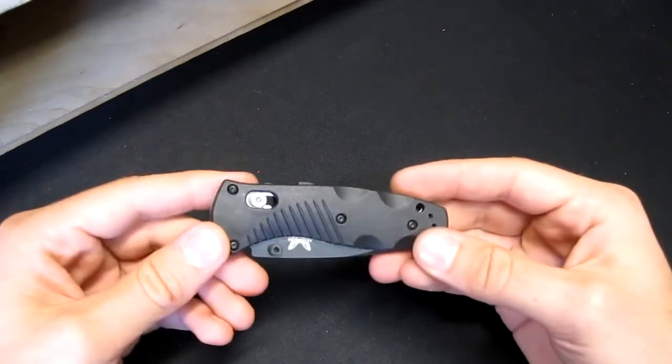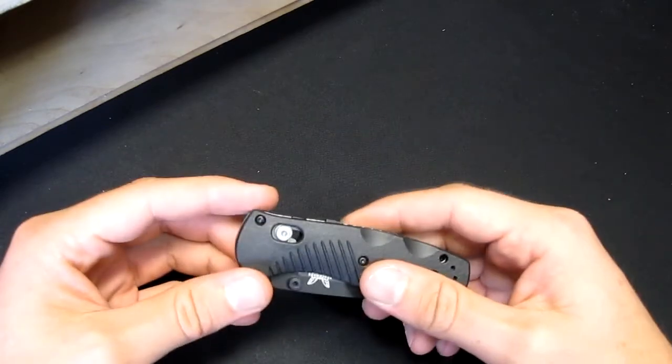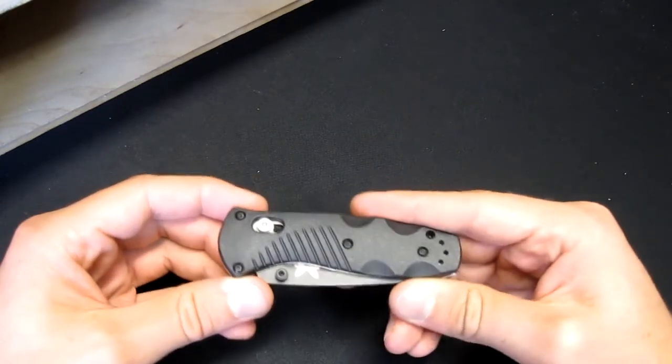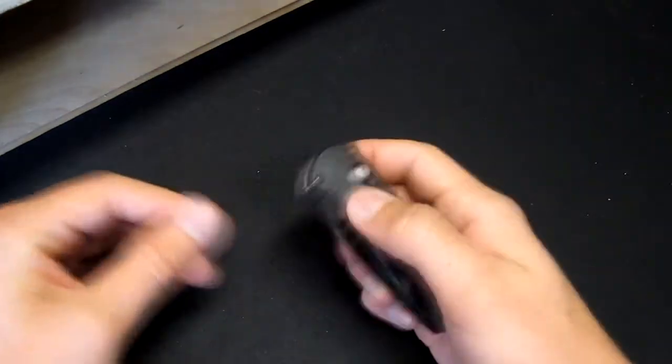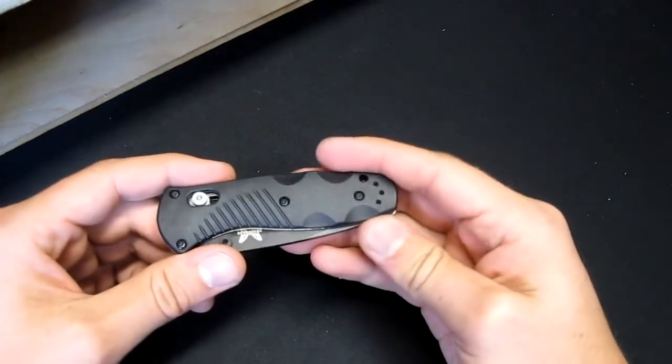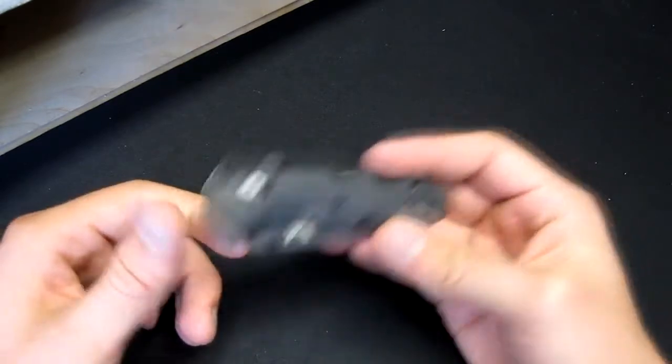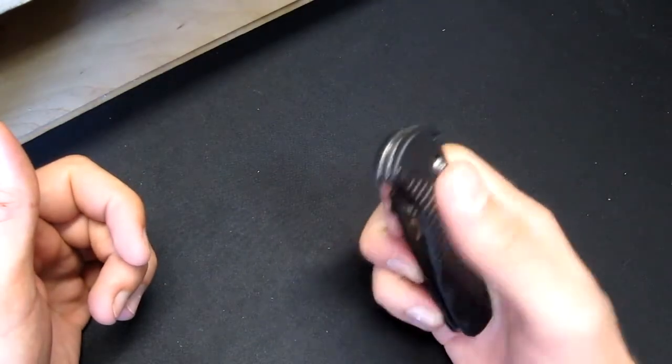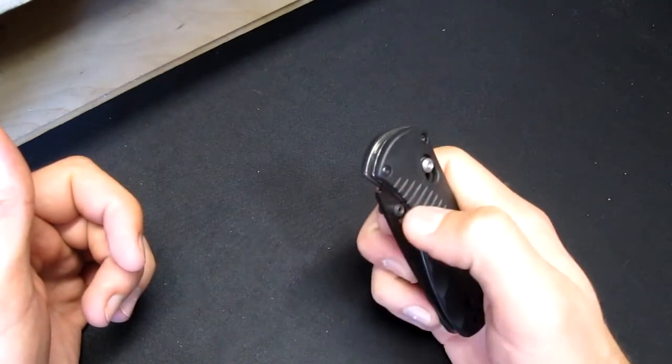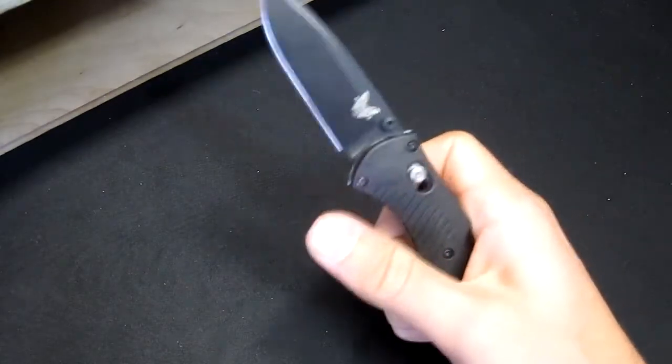So it was between this and the Mini Griptilian, and in the end I just decided to get this one, just because a lot of people have Griptilians and this one's assisted, so it's just a little bit more fun. Really, the Griptilian and the Mini Barrage, they come out at the same speed, it's just this one, on the Griptilian sometimes you might miss and you won't deploy it properly. This one you'll never miss, it'll always come out, even if you do kind of a wonky job.